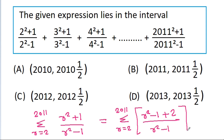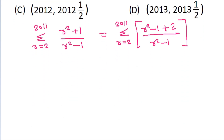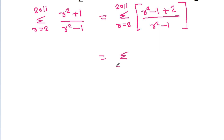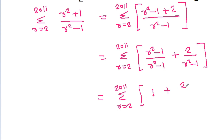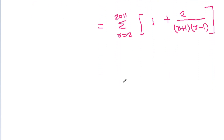And the summation from r=2 to 2011 of (r²-1)/(r²-1) gives summation from r=2 to 2011 of 1 plus 2/(r²-1).